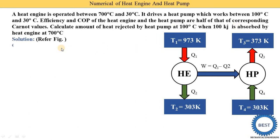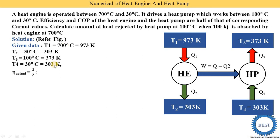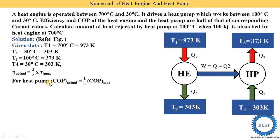We note the temperatures T1, T2, T3, and T4. The actual efficiency is 50% of the maximum Carnot efficiency. First we find the Carnot efficiency, then the actual efficiency. Similarly, for the heat pump, the actual COP is one half of the maximum COP.